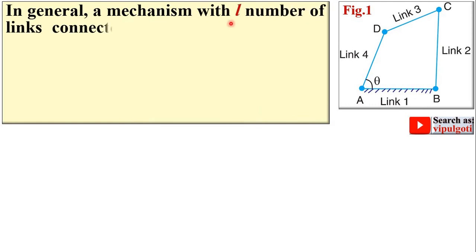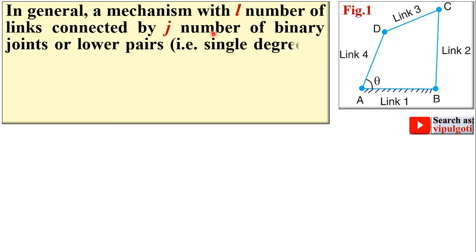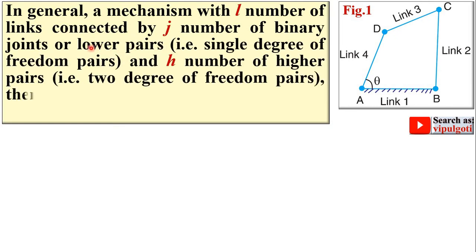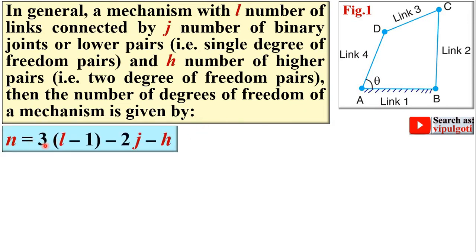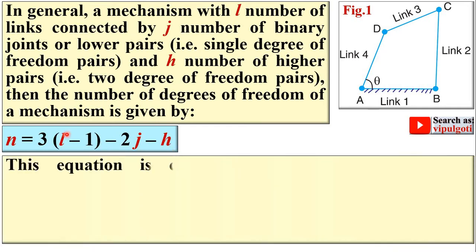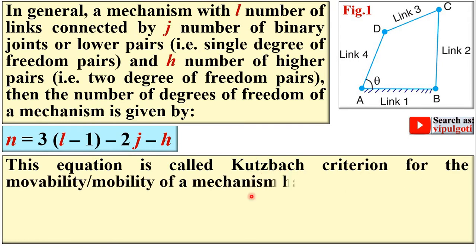In general, for a mechanism with L number of links connected by J number of binary joints (lower pairs having single degree of freedom) and H number of higher pairs (two degree of freedom pairs), the number of degrees of freedom is given by: N = 3(L − 1) − 2J − H, where N is the degrees of freedom, L is the number of links, J is the number of binary joints, and H is the number of higher pairs. This equation is called the Kutzbach criterion for the movability of a planar mechanism.